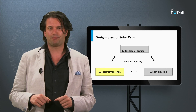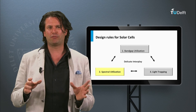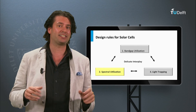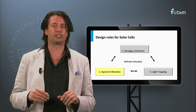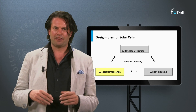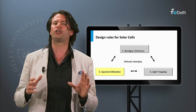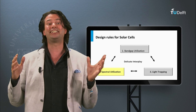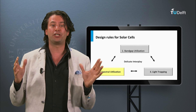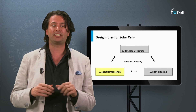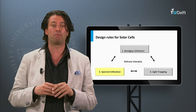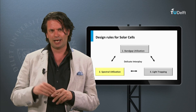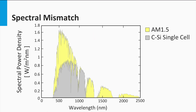For a single junction solar cell, the band gap of the semiconductor material determines the theoretical maximum current density and the open-circuit voltage that can be obtained. Therefore, considering single junction solar cells, we arrive at the next question: what is the optimum band gap for the absorber semiconductor at which the highest conversion efficiency can be obtained using the AM1.5 solar spectrum? Let's find an answer to that question.